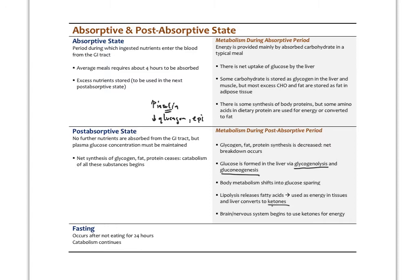People usually feel calmer after eating because epinephrine, the stress hormone, is lowered. That's why some people overeat — they eat to quell anxiety. In the post-absorptive state, we get low insulin while glucagon and epinephrine levels rise, making you feel more anxious. We shift from an absorptive, more anabolic state into a more catabolic state, and fasting continues that further.